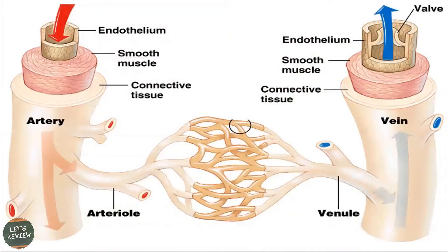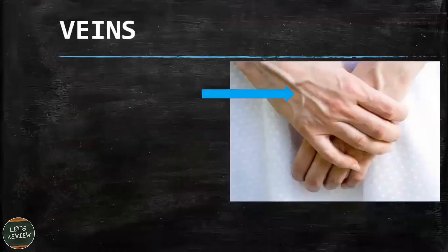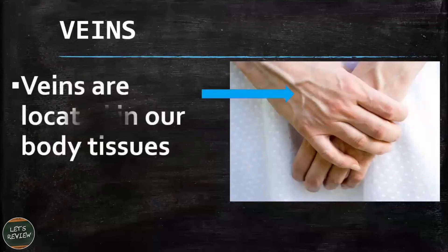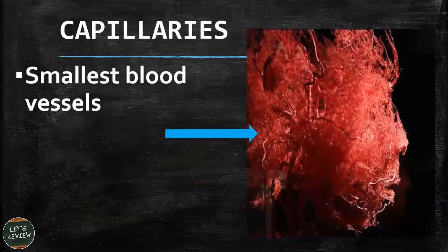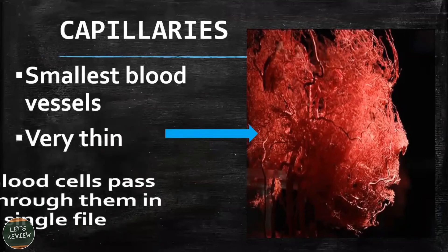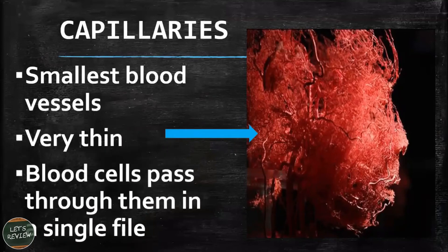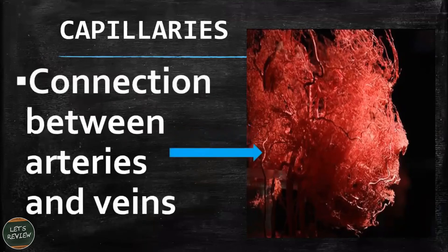Looking at the sizes of the vein and artery, in the middle they are connected by the capillaries — the same relationship as artery and arteriole. Veins are located in our body tissues and can be seen, while capillaries are the smallest blood vessels, very thin. Blood cells pass through them in a single file, and capillaries connect the arteries and the veins.